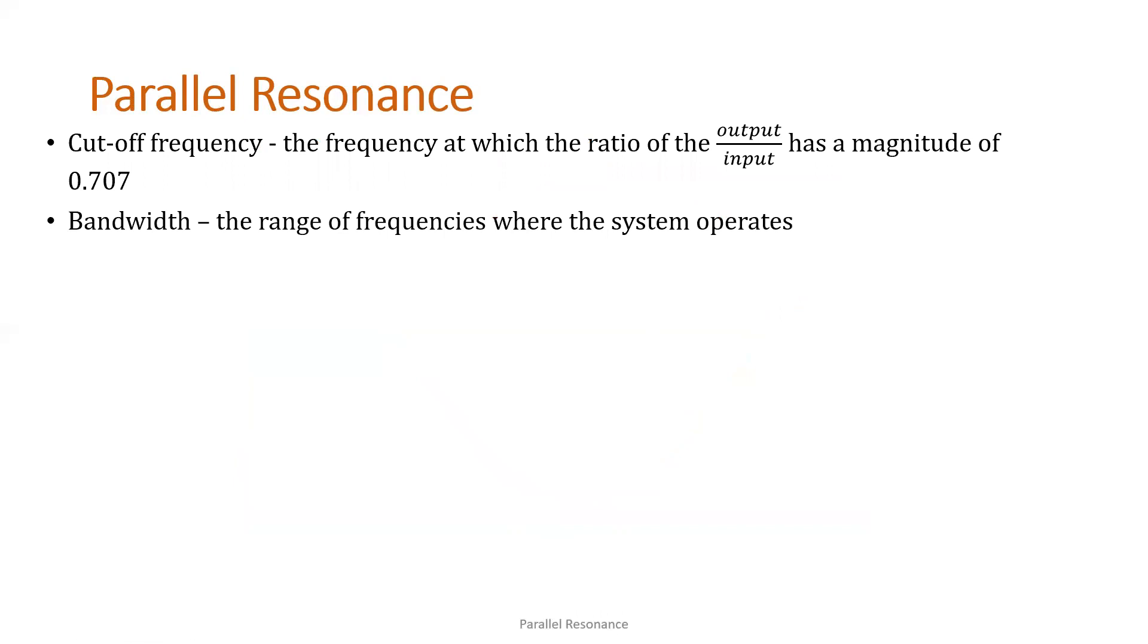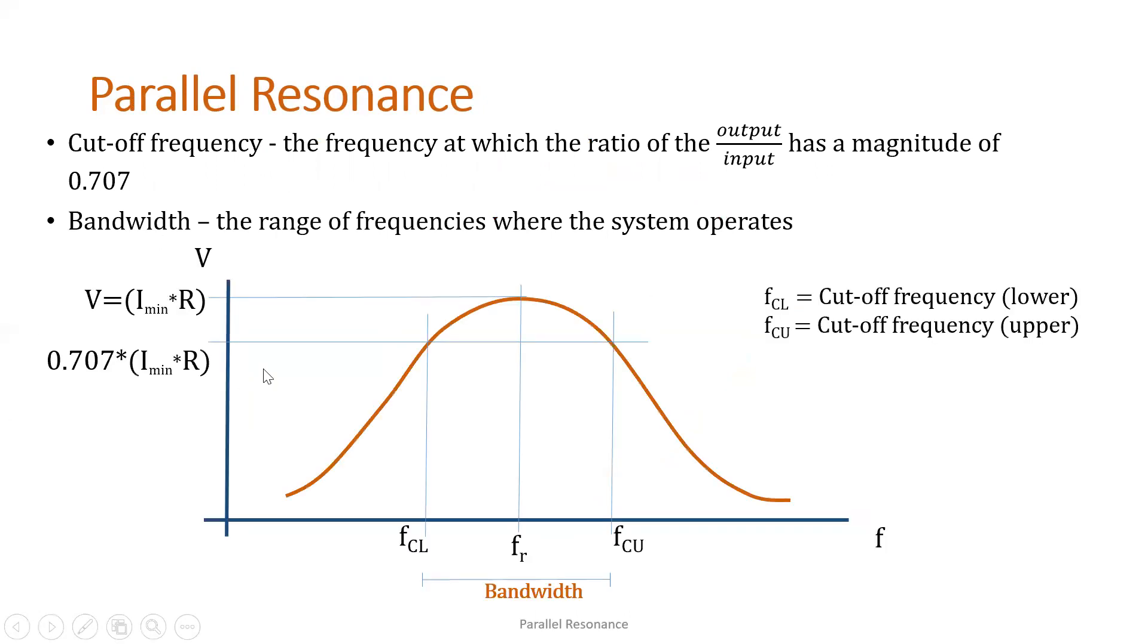So we still have the same terms, just like the ones we had in series resonance. So we have the cutoff frequency, we have the bandwidth. So this is the voltage versus frequency graph. Resonant frequency and the lower and upper cutoff frequencies. Still, those two is where the 70.7% of the maximum.